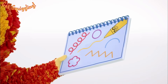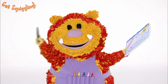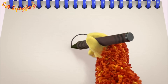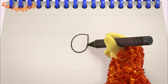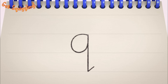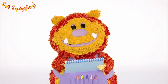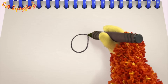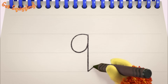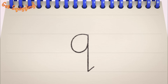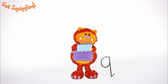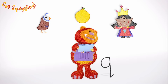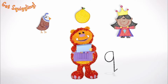Have you got your squiggle pads and squiggle sticks ready? Let's get squiggling! Holding your squiggle stick like this, move it round, up, down and tick — the letter Q. Let's squiggle it again: go round, up, down and tick — the letter Q. Shall we squiggle some things that start with the letter Q? A quail, a quince and a queen — they all begin with the letter Q.